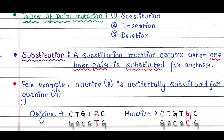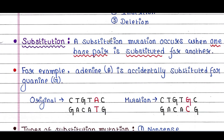First is substitution. A substitution mutation occurs when one base pair is substituted for another. For example, here you can see adenine is accidentally substituted for guanine.